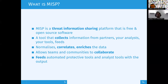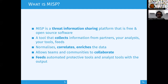When you have all that information, you have to do something with it. The first thing is to normalize the information, which is a key element especially if you want support for correlations. For example, if you get information from third parties, you want to ensure phone numbers or IPv6 addresses always follow the same rules. That's why MISP has the ability to normalize this information.